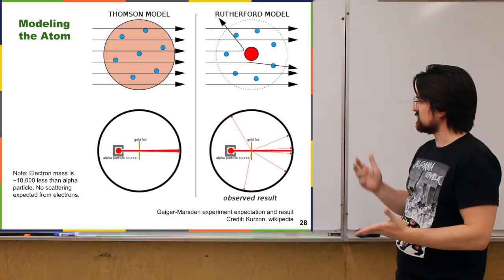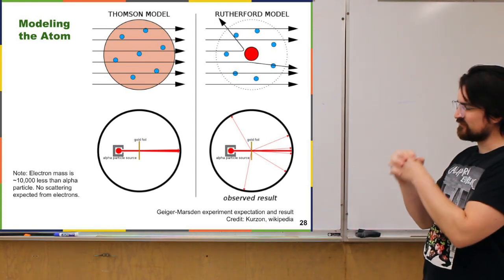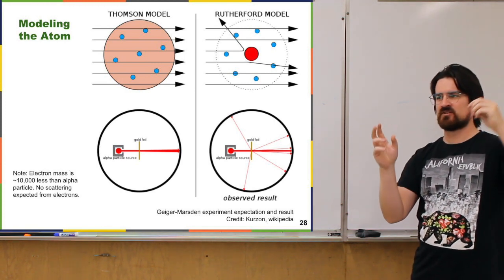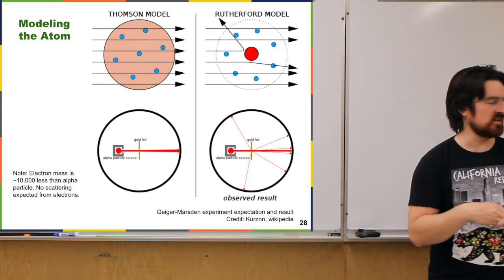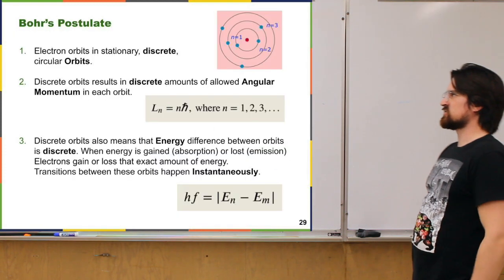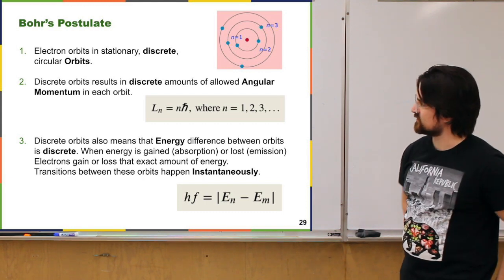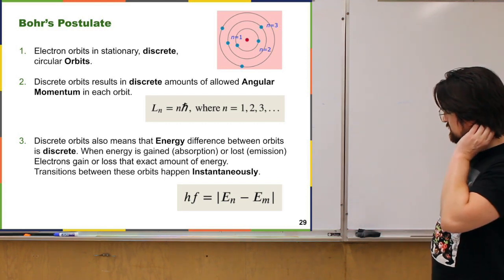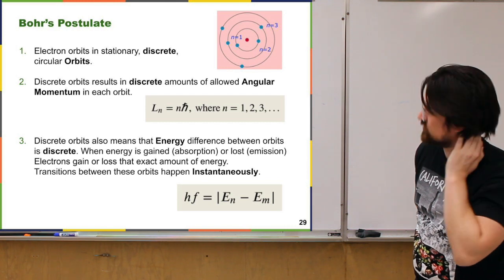The Rutherford model is better, but still not great — just a positive chunk in the middle with tiny negative electrons floating around. It wasn't able to tell us anything about atomic spectra or why they are the way they are. Then comes Niels Bohr with his own postulates about the hydrogen atom, and atoms in general. This was published around 1913.